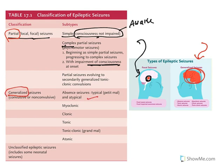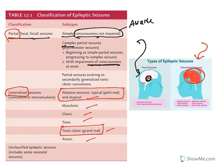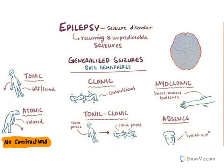In generalized seizures, you have absence seizures, myoclonic, clonic, tonic, tonic-clonic, and atonic. The important two are tonic-clonic, also known as grand mal epilepsy, and absence seizures, known as petit mal epilepsy. Some unclassified epileptic seizures are also there, like febrile seizures — when young children have a very high temperature, they may get a seizure attack.